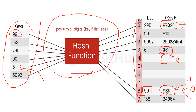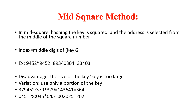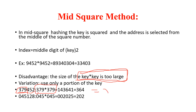There is one more exception in the mid square method. If the size of the key is too large, it becomes hard to square and extract the mid. In that case, you take the starting 3 digits of the key, then square that, and then extract the R-digit mid value.